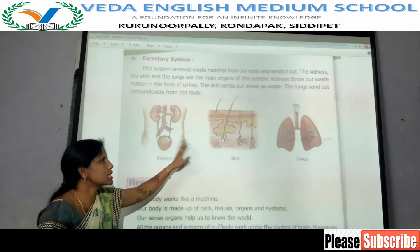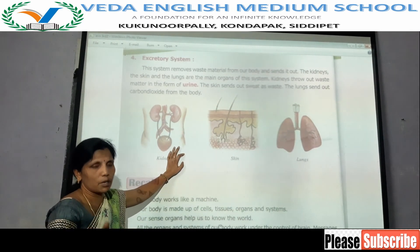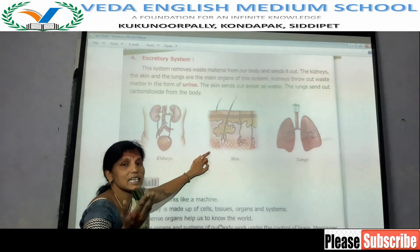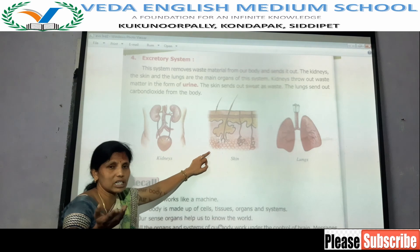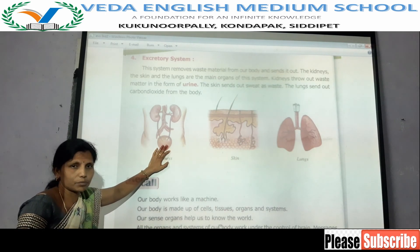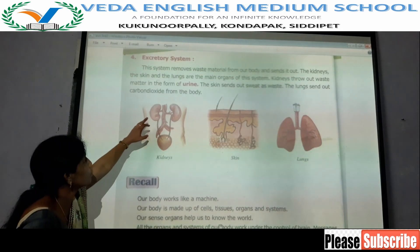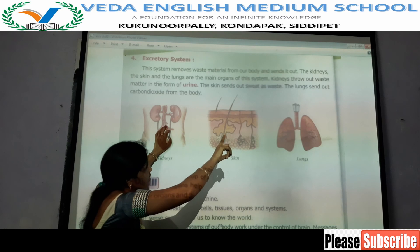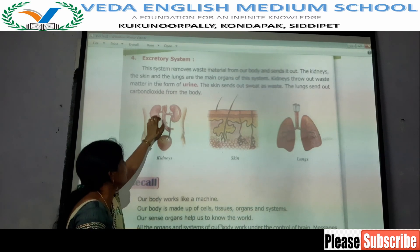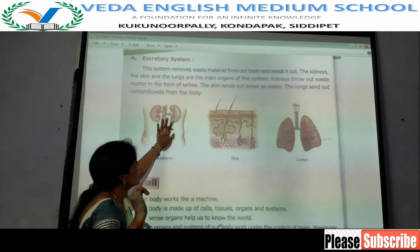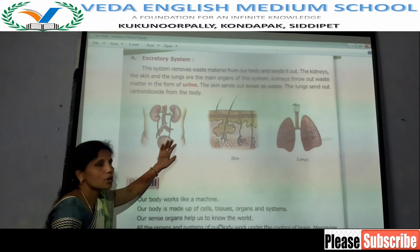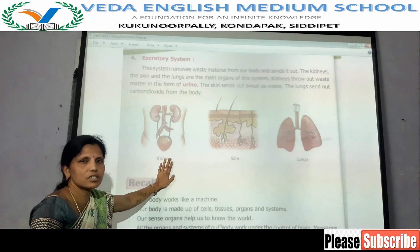The excretory organs are kidneys, skin, and lungs. The lungs send out carbon dioxide from the body. The skin sends out sweat as waste. The kidneys throw out waste matter in the form of urine. This system removes waste material from our body and sends it out. Did you understand this lesson, children?